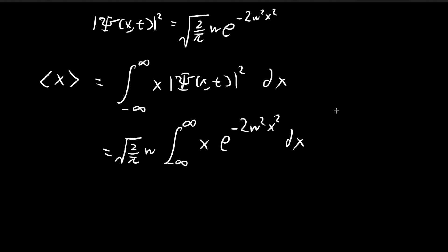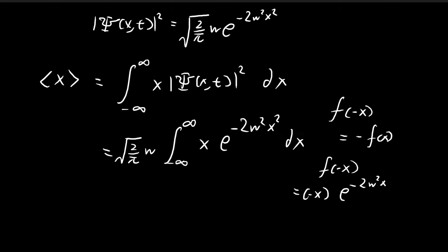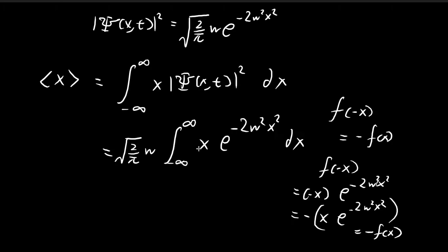This integrand is actually an odd function. An odd function means a function where f of negative x equals negative f of x. If f of x equals x times e to the power of negative 2w squared x squared, then f of negative x equals negative x times e to the power of negative 2w squared x squared, satisfying the condition. Because the bounds are symmetrical, going from negative infinity to infinity, this whole integral is equal to zero.